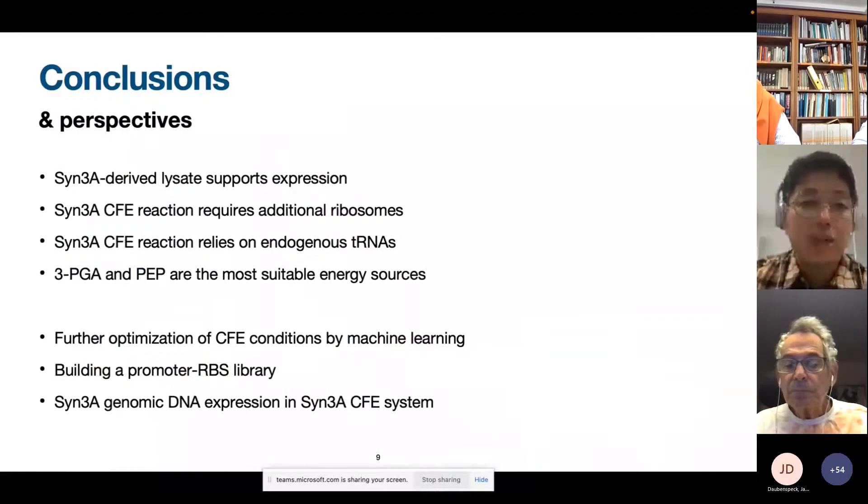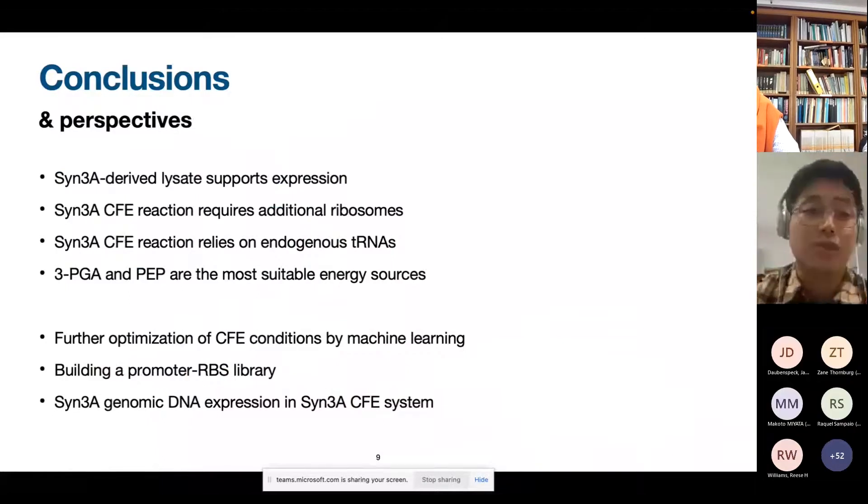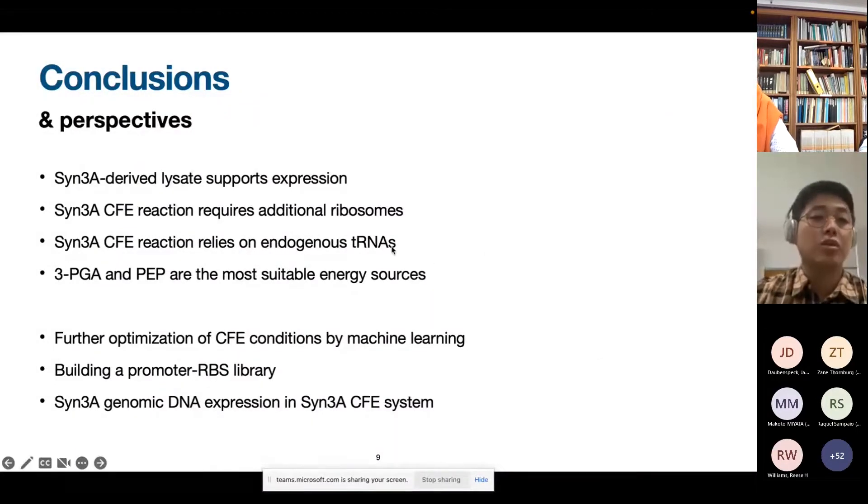So my conclusions for that is that we can finally derive SYN3A cells, SYN3A lysates that support expression. One important thing here is that this SYN3A CFE reactions, they relied on the addition of ribosomes on top of the reaction. So we have to add more ribosomes into the reaction mix. So it seems that the concentration of the ribosomes in the lysate is too low. So we have to add extra ones. It's good to know also that the reaction mix relies on the endogenous tRNAs and 3PGA and PEP are the most suitable energy sources.